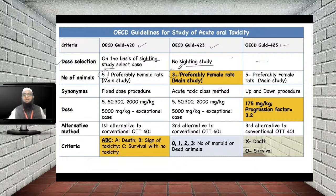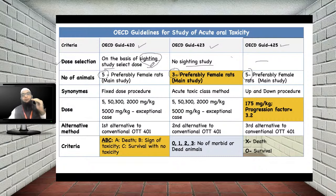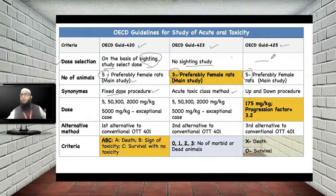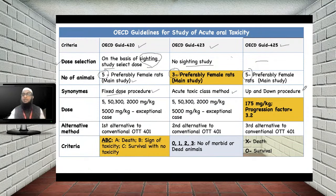In OECD 420, once the starting dose is selected via the sighting study, the dose is fixed — that is why OECD 420 is called the fixed dose procedure. OECD 423 is called the acute toxicity class method because drugs are classified into GHS categories. OECD 425 is called the up-and-down procedure — based on toxic effects you either increase or decrease the dose.